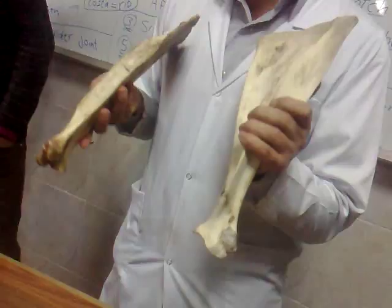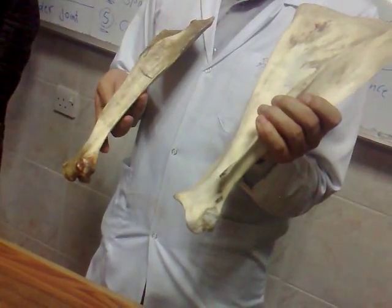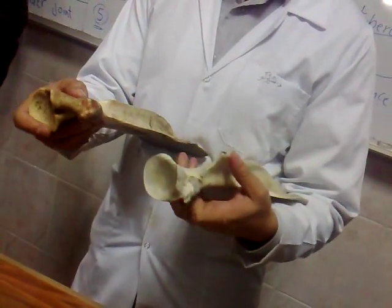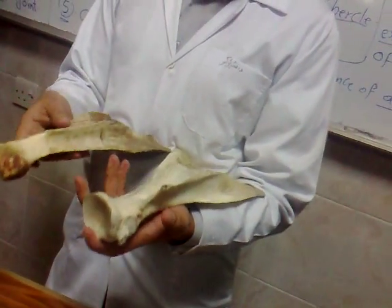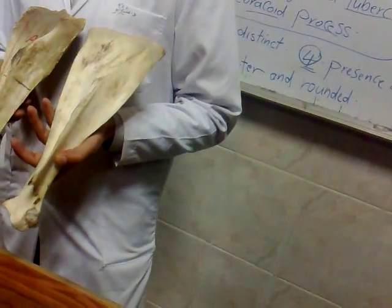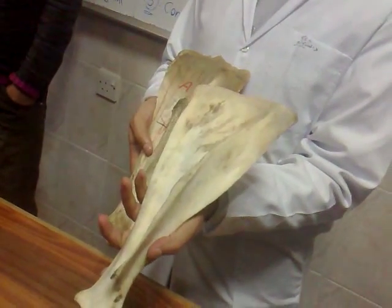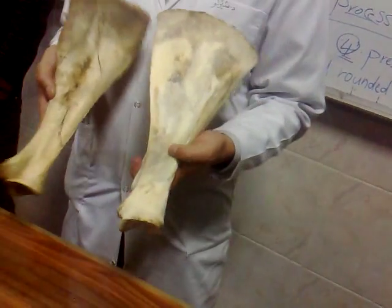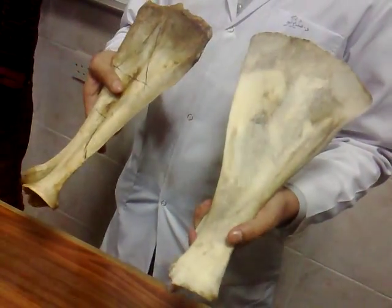The supraglenoid tubercle in the horse is more projected than that of the cow. Glenoid notch in the horse is obvious while in the ox it is not clear. Subscapular fossa is deep in the horse, but shallow in the cow.